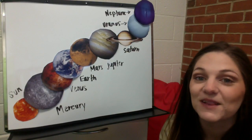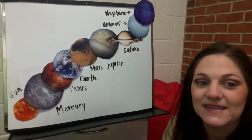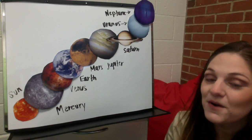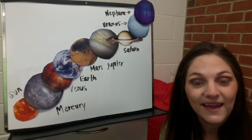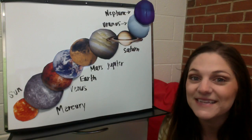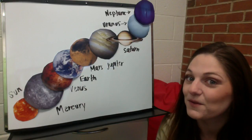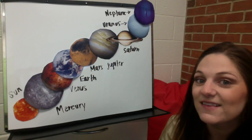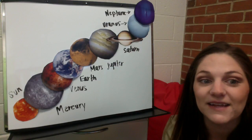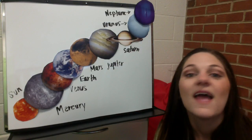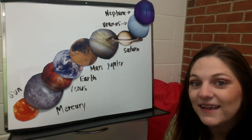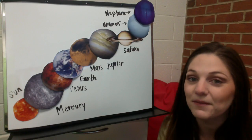Next we're going to learn a song about the eight planets. It goes to the tune of "The More We Get Together." Our Sun has eight planets. Our Sun has eight planets. Let's sing them right now.